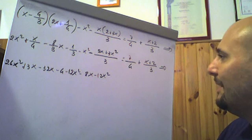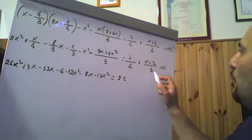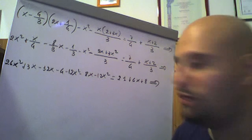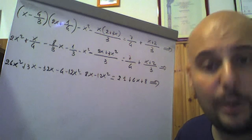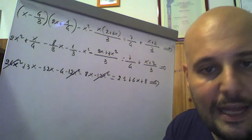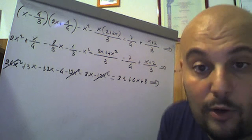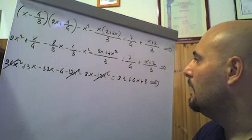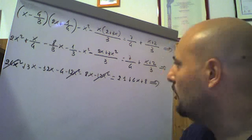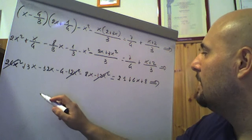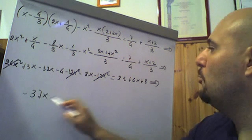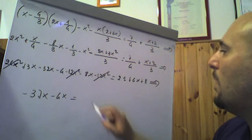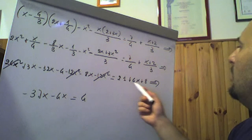Occhio agli errori di segno. Uguale: 12 diviso 4 fa 3 per 7 è 21; 12 diviso 3 fa 4, questo 4 moltiplica (x+2): 4 per x è 4x, 4 per 2 è 8. Nel membro di sinistra -12x² meno 12x² fa -24x² che se ne va con 24x². -32x meno 8x fa -40x; -40x più 3x è -37x, che sommato col -4x portato a destra diventa -41x. I termini noti: -4 portato a destra cambia segno e diventa +4, più 8 più 21 fa 29, più 4 fa 33.